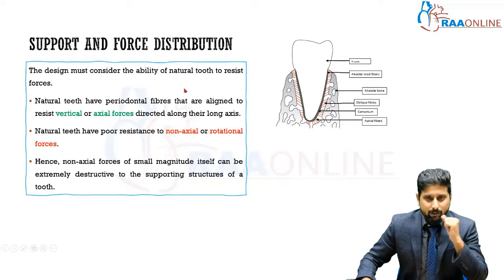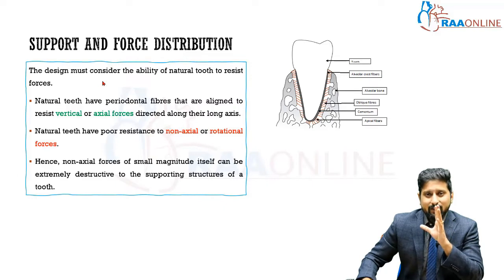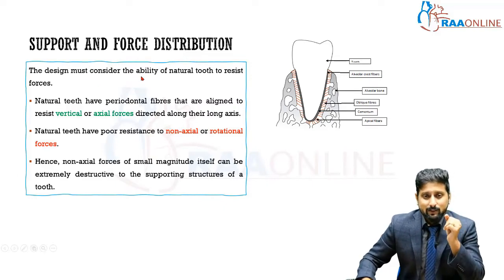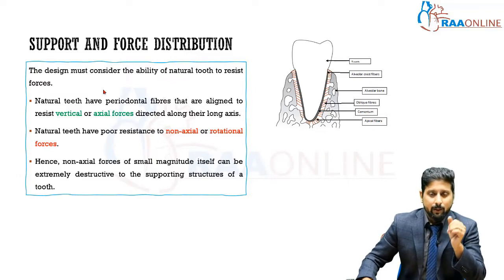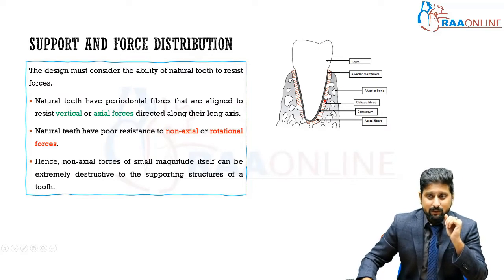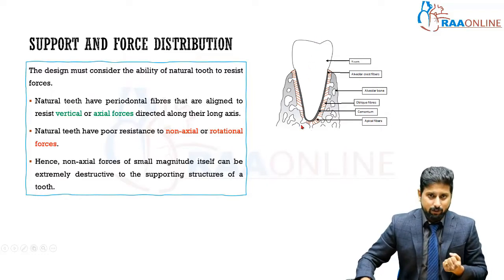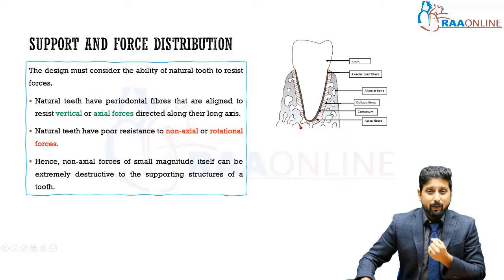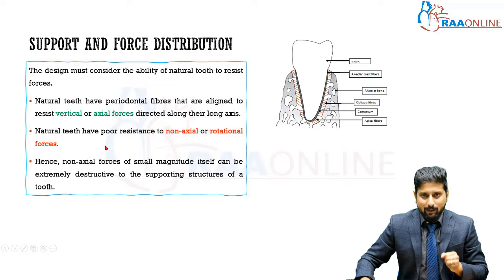For support and force distribution, the RPD takes support from the natural tooth, so we need to understand what the natural tooth is capable of doing. The design must consider the ability of the natural tooth to resist forces, because any movement in the RPD is transmitted to the natural tooth. Natural teeth have periodontal fibers aligned to resist vertical or axial forces directed along their long axis. Most PDL fibers are oriented so the tooth can withstand compressive forces along the long axis, but they have very poor resistance to non-axial, rotational, or angulated forces.